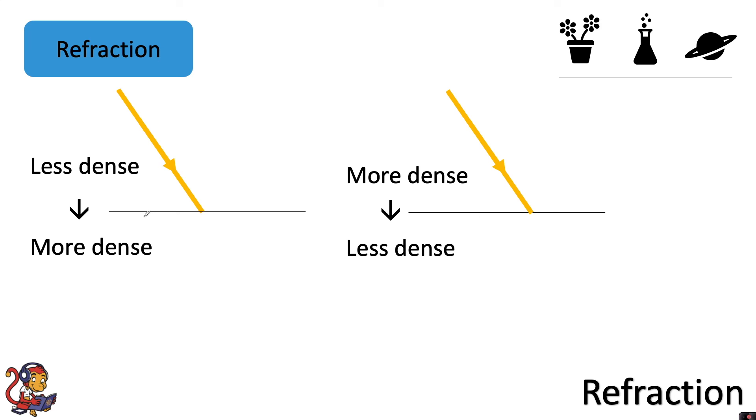So you might see some diagrams that don't show a glass block, but instead just show a barrier, to show the light moving into a different medium. So we've got two different examples here. We've got where it moves from a less dense to a more dense medium. And this one is the opposite, where the light's moving from a more dense to a less dense medium. And on both diagrams, you've got the incident ray going in.